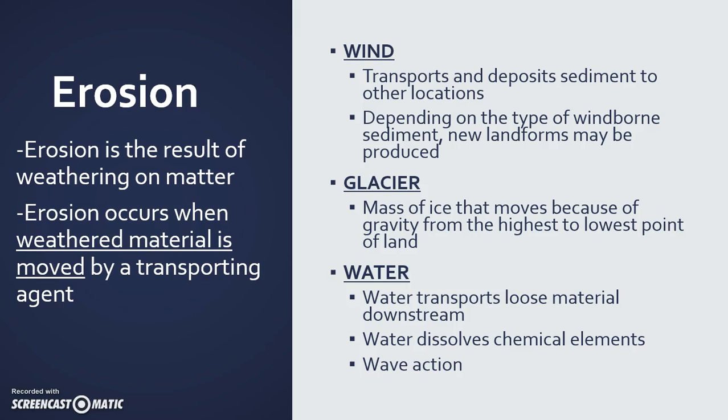Glaciers can also be formed through erosion — the mass of ice that moves because of gravity from the highest point to the lowest point is also erosion. Water also moves a lot of sediment. In rivers and oceans, the material that starts breaking down due to weathering is moved through water, taking all that loose material downstream, and sometimes dissolving chemical elements. The wave action going in and out of the shore is moving sand in and out of the beaches, and that is also known as erosion.